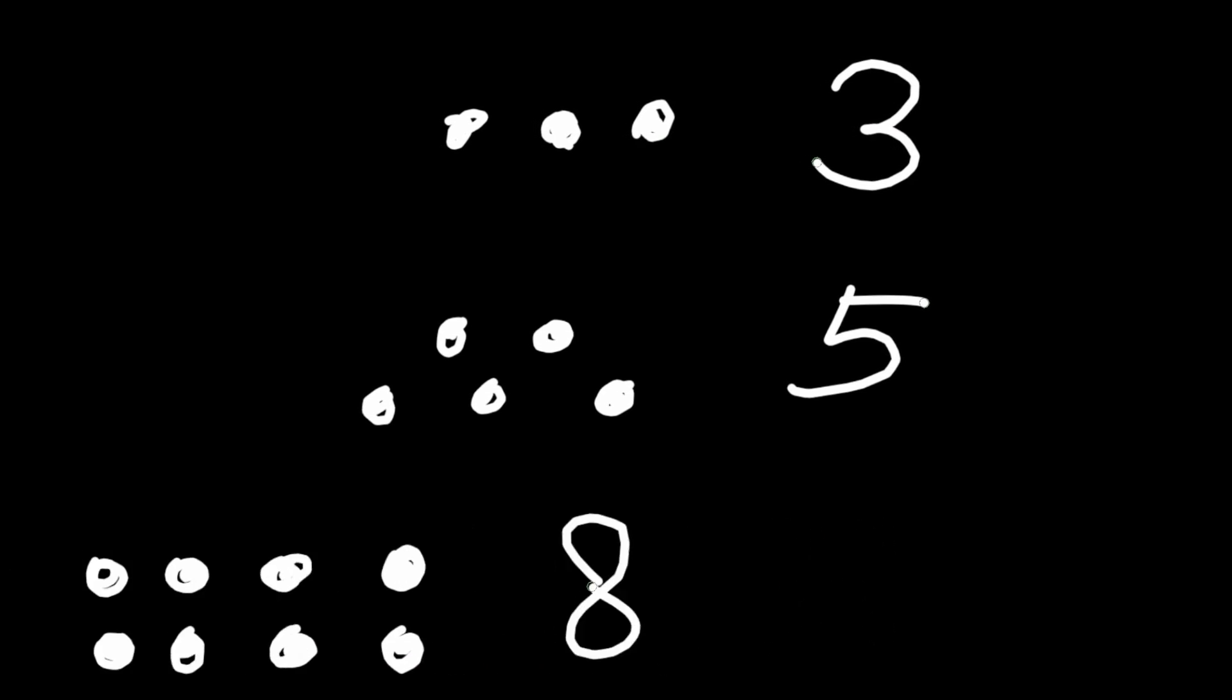First of all, let's talk about what a number is. A number is just a way of representing a quantity. It could be something like 3, 5, or 8. And we use numbers all the time in our daily lives to count things, to measure things, and even to make calculations.